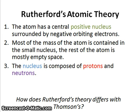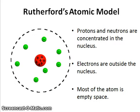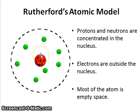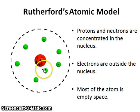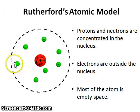He also discovered protons later on during his work, and the third point is that the nucleus is composed of protons and neutrons. Remember that Rutherford discovered protons and James Chadwick discovered neutrons under Rutherford's guidance. In Rutherford's atomic model, the protons and neutrons are concentrated in the nucleus forming a very dense, concentrated positive mass, while the electrons are outside the nucleus and most of the atom is empty space.